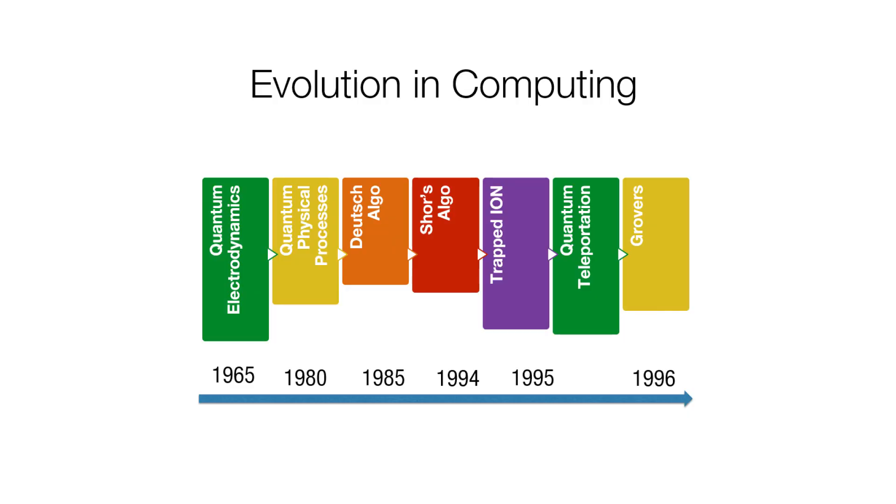You see the history: in 1965, you had quantum electrodynamics and quantum physical processes. Around the 1980s, you had Deutsch's algorithm, which had concepts like universal quantum computing. And you had Peter Shor's algorithm, which was primarily focusing on prime number factoring. The trapped ion concept was found first in eastern California. And they had quantum teleportation and Grover's algorithm for search in 1996.